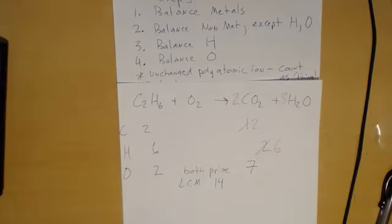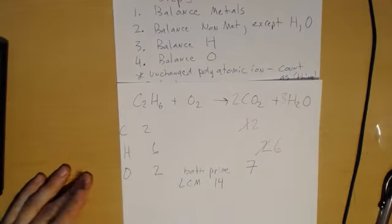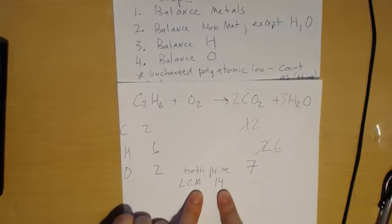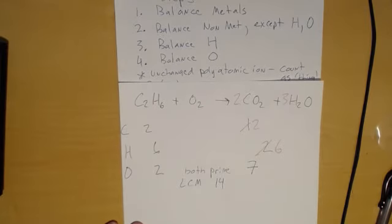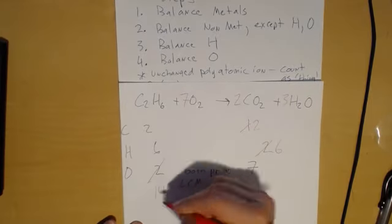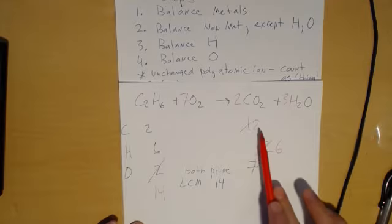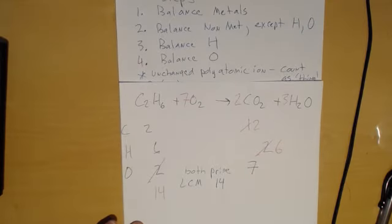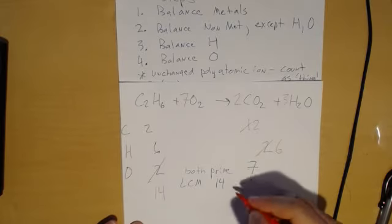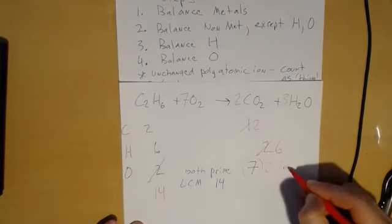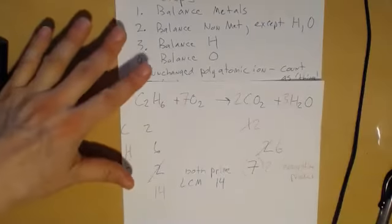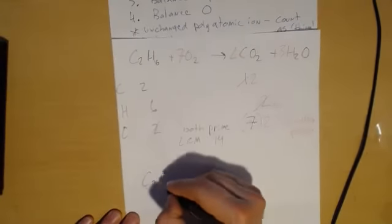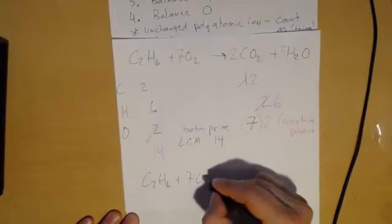The lowest common multiple is actually the product: 14. There are two ways to do this. I like the lowest common multiple approach. If I have two here and want 14, multiply by seven — so now I have 14. Now I have seven total on the right and need 14, so I multiply everything on the product side by two.